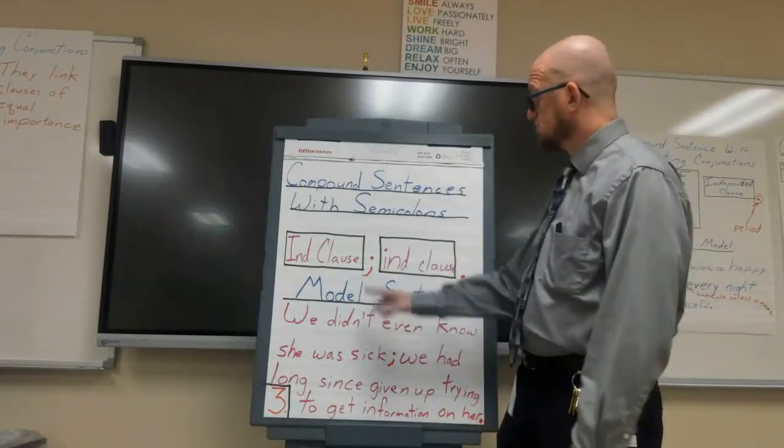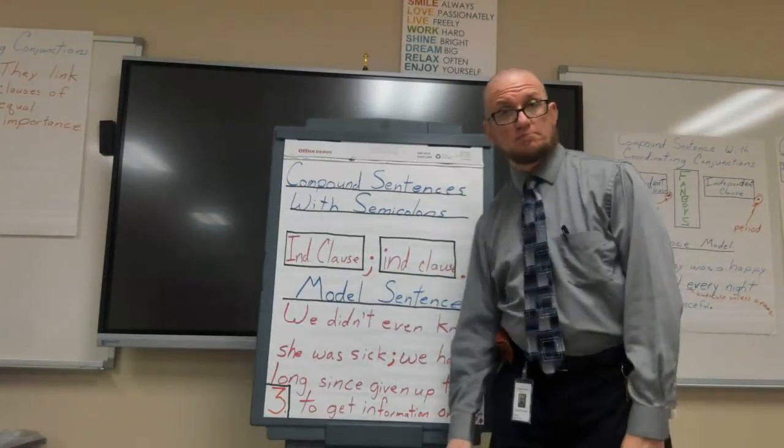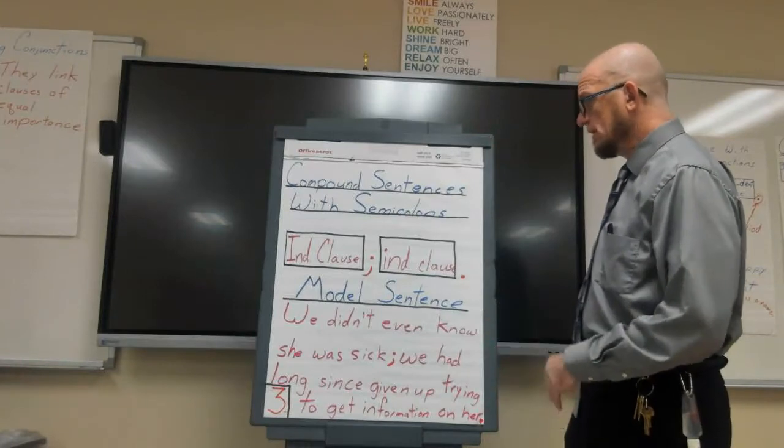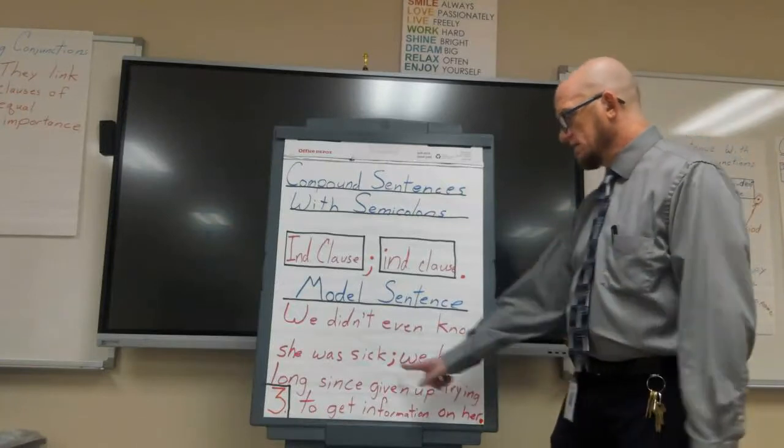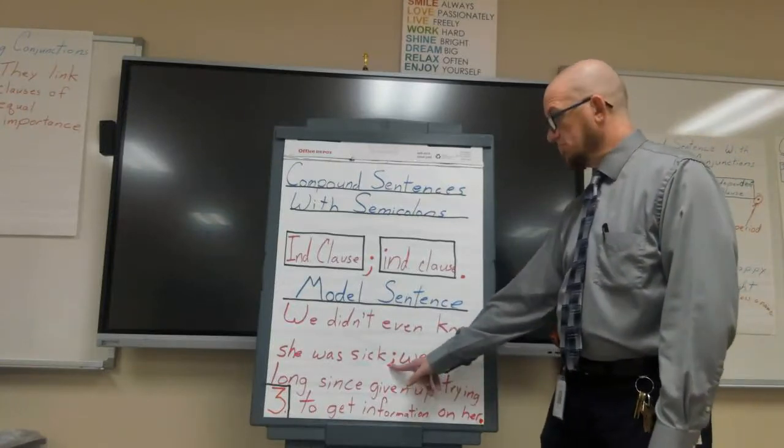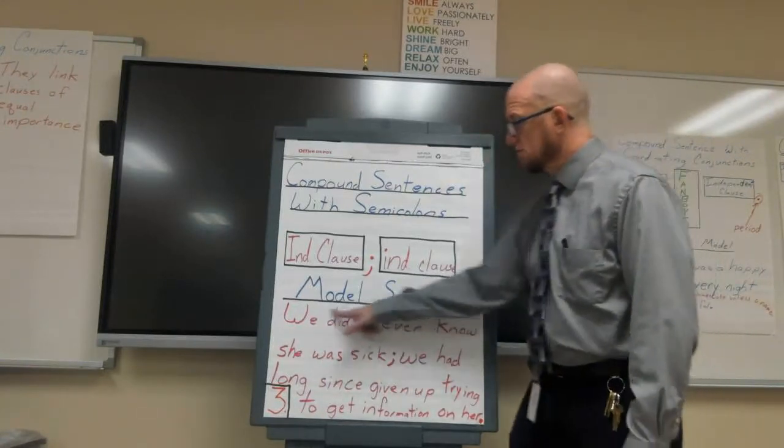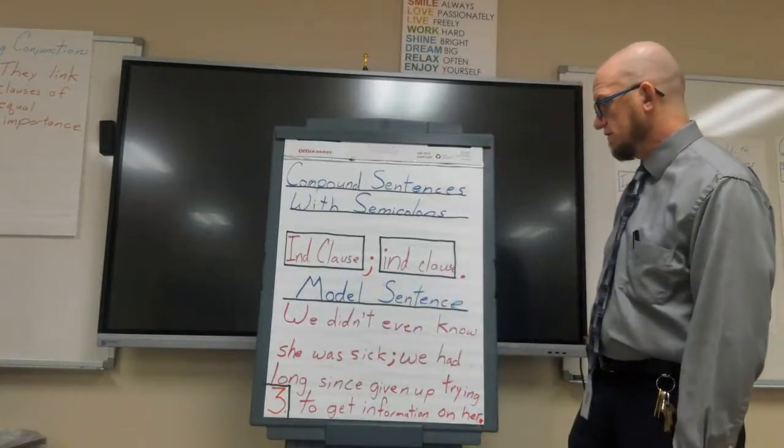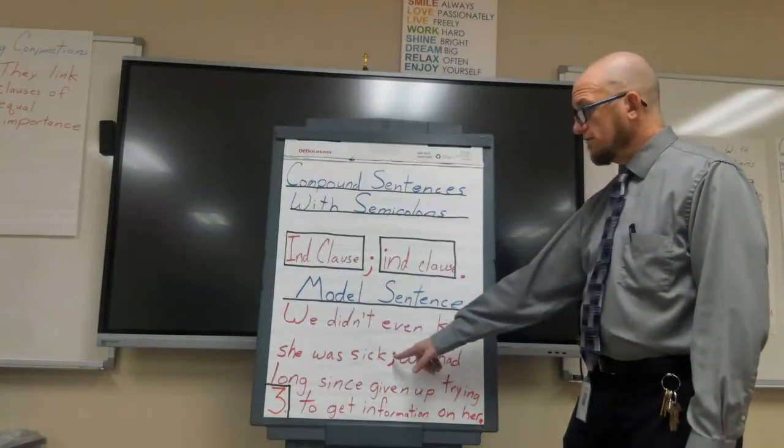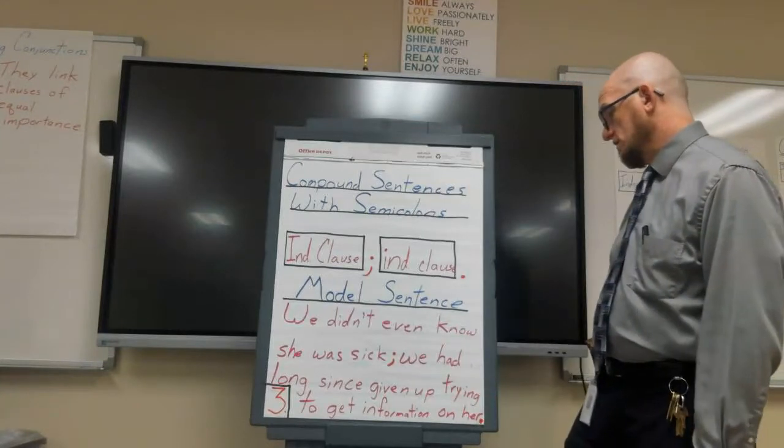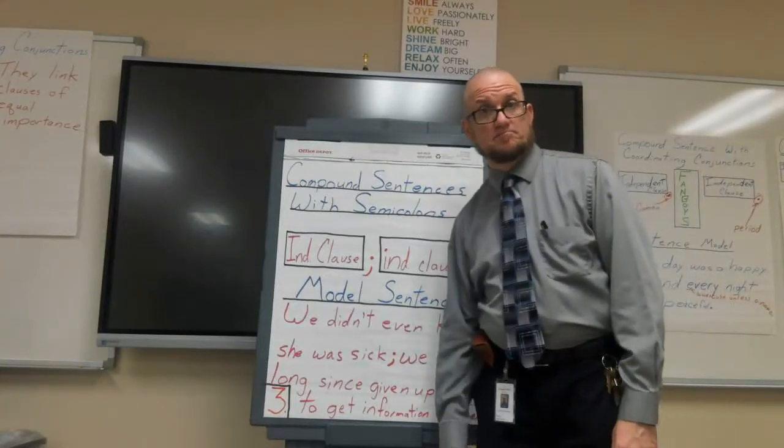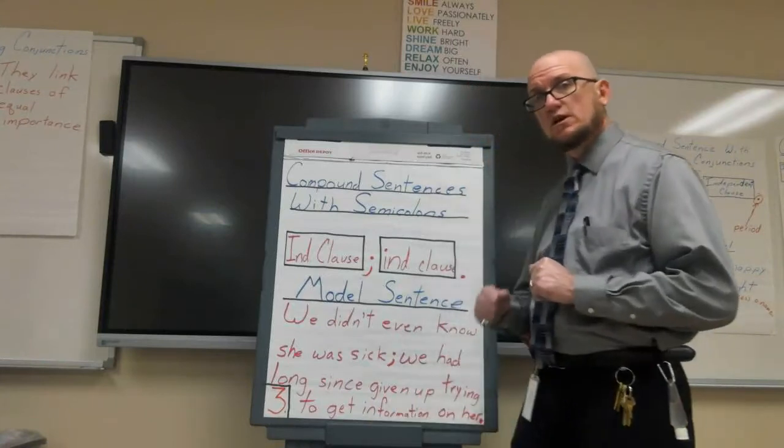So how do you do that? Use the semicolon. Let's look at our sentence model: "We didn't even know she was sick; we had long since given up trying to get information on her." This comes from the short story "A Rose for Emily."